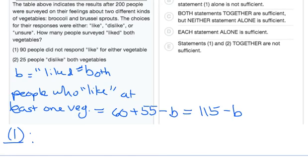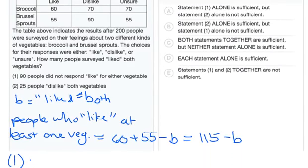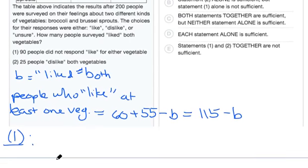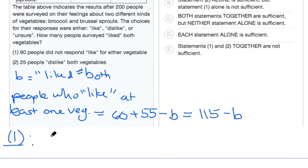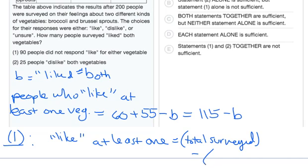For statement one, we're given that 90 people did not respond 'like' for either vegetable. Since the people who like at least one of the vegetables equals the total surveyed minus those who did not respond 'like' for either vegetable, let's write this down: people who like at least one vegetable equals total people surveyed minus the people who did not respond 'like' for either vegetable.